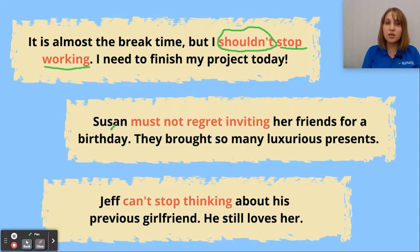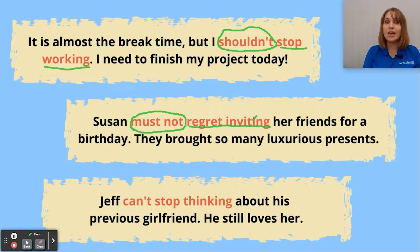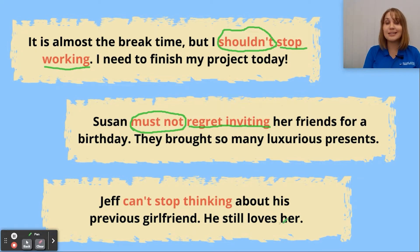'Susan must not regret inviting her friends for a birthday. They brought so many luxurious presents.' Here 'must not' is the auxiliary verb with negative particle, and 'regret inviting' is the gerund. 'Jeff can't stop thinking about his previous girlfriend. He still loves her.' Here 'can't' is the auxiliary verb with negative particle, and 'stop thinking' is the gerund.